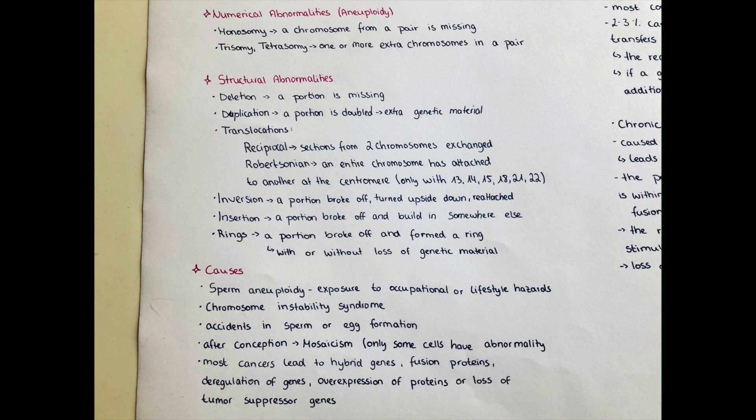Or Robertsonian translocations, where an entire chromosome has attached to another at the centromere. This can only happen with chromosomes number 13, 14, 15, 21, and 22.